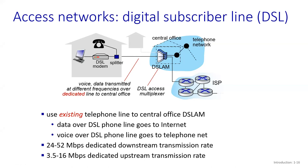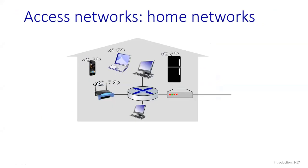Now, what will be the transmission rate? The downstream transmission rate will be 24 to 52 Mbps, because it doesn't need more transmission rate for the downstream. And for the upstream transmission rate, it takes only 3.5 to 16 Mbps.